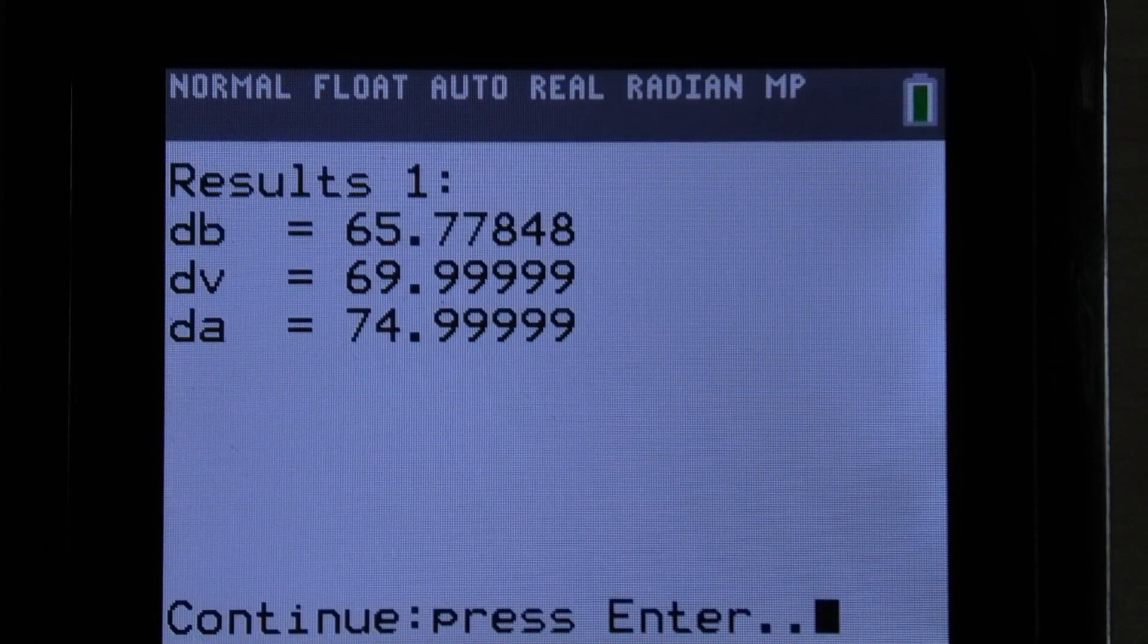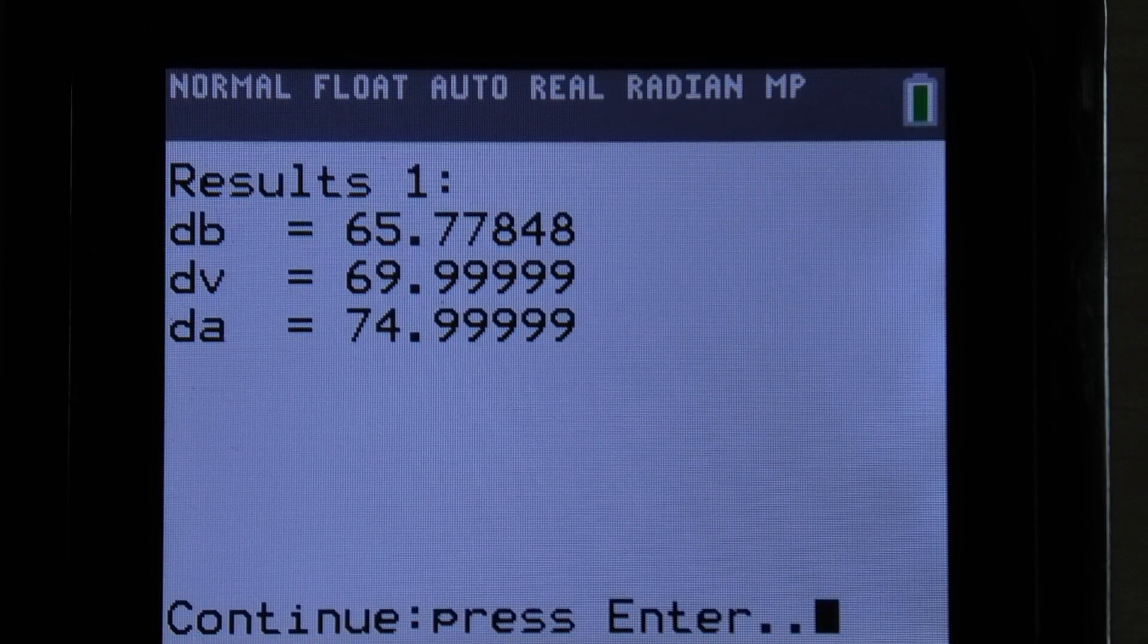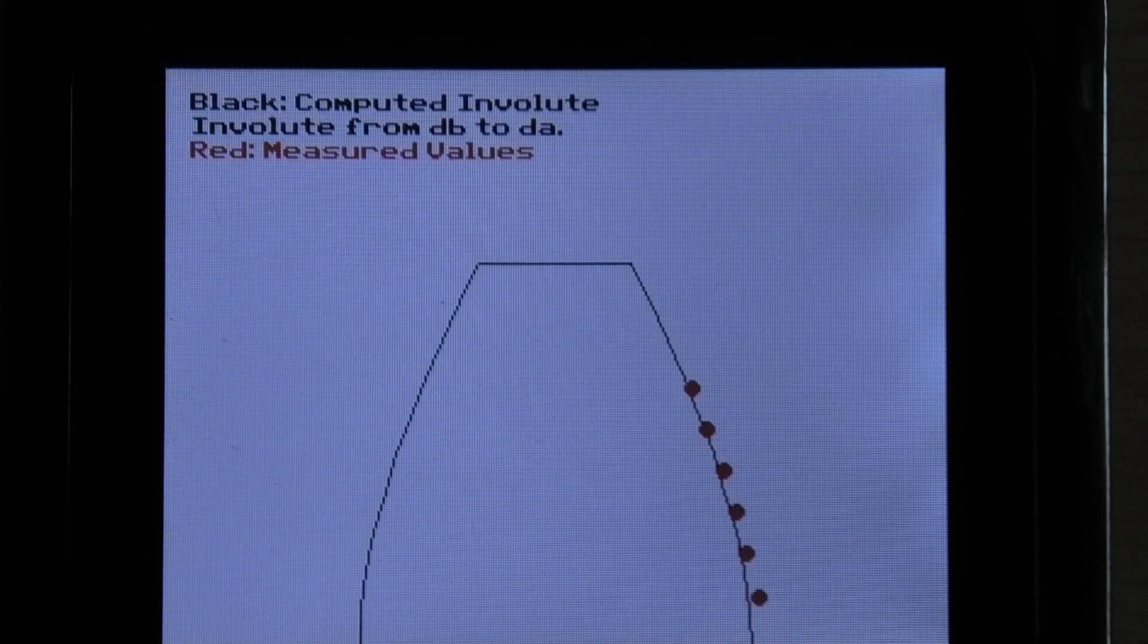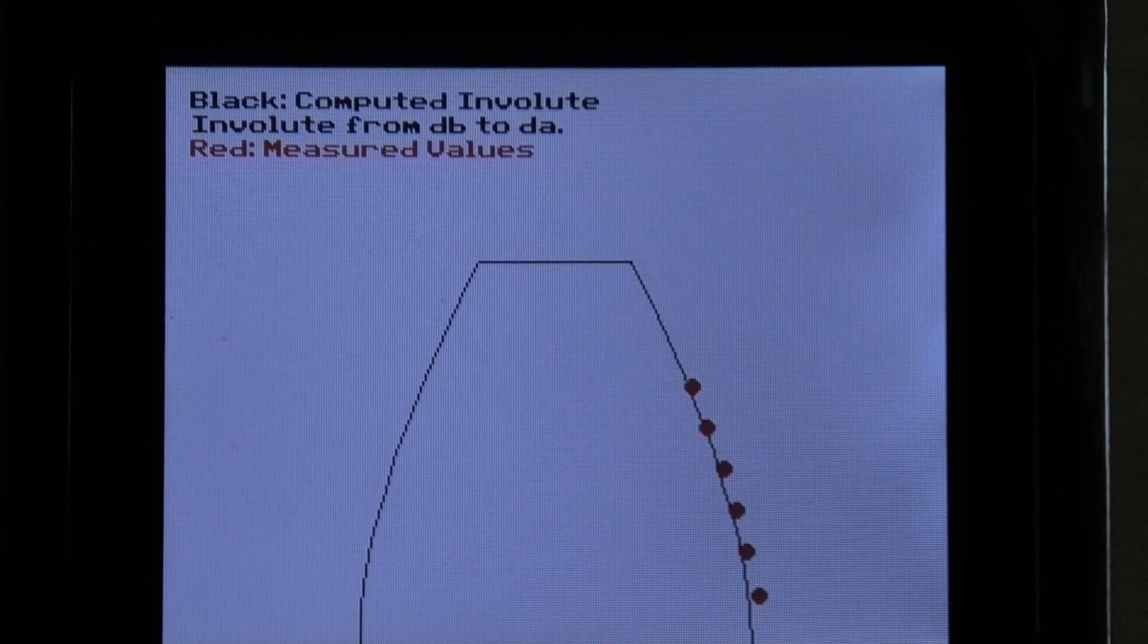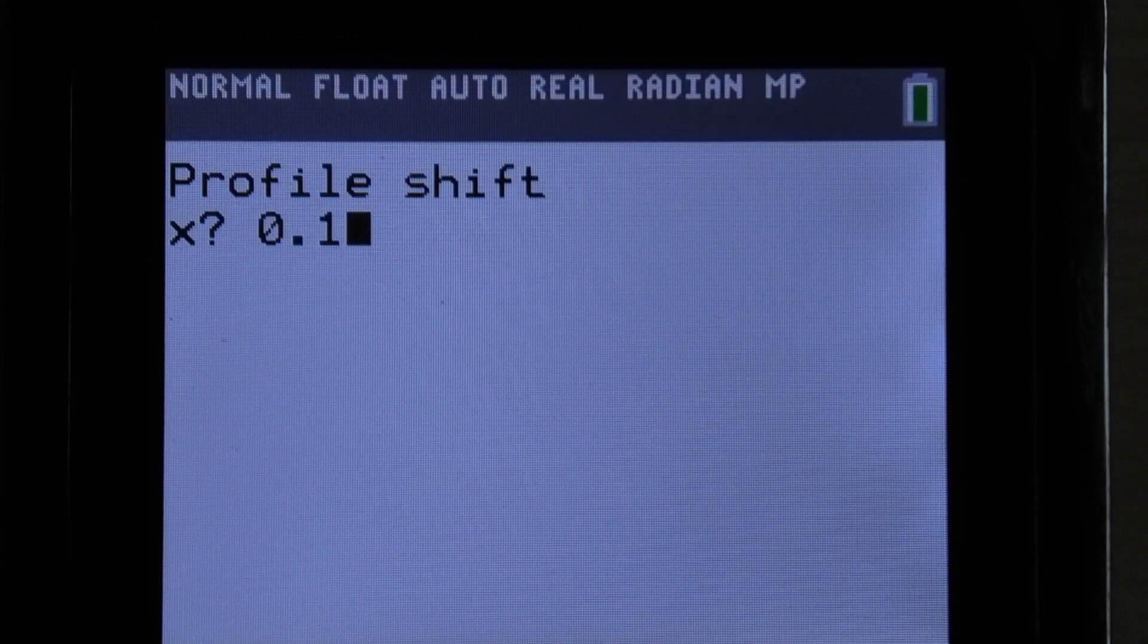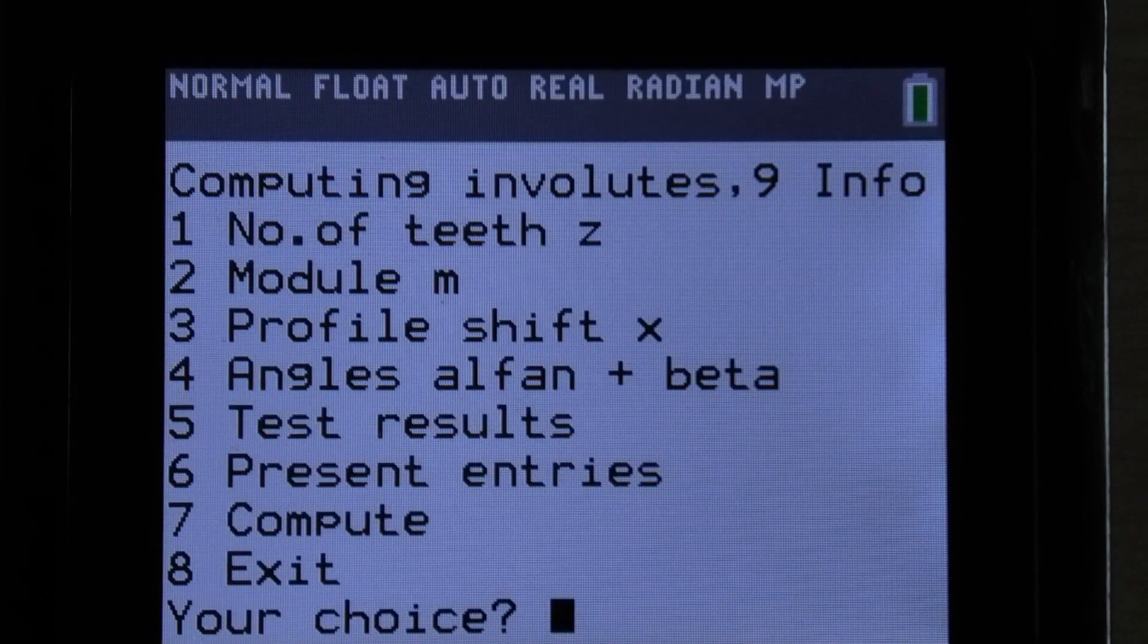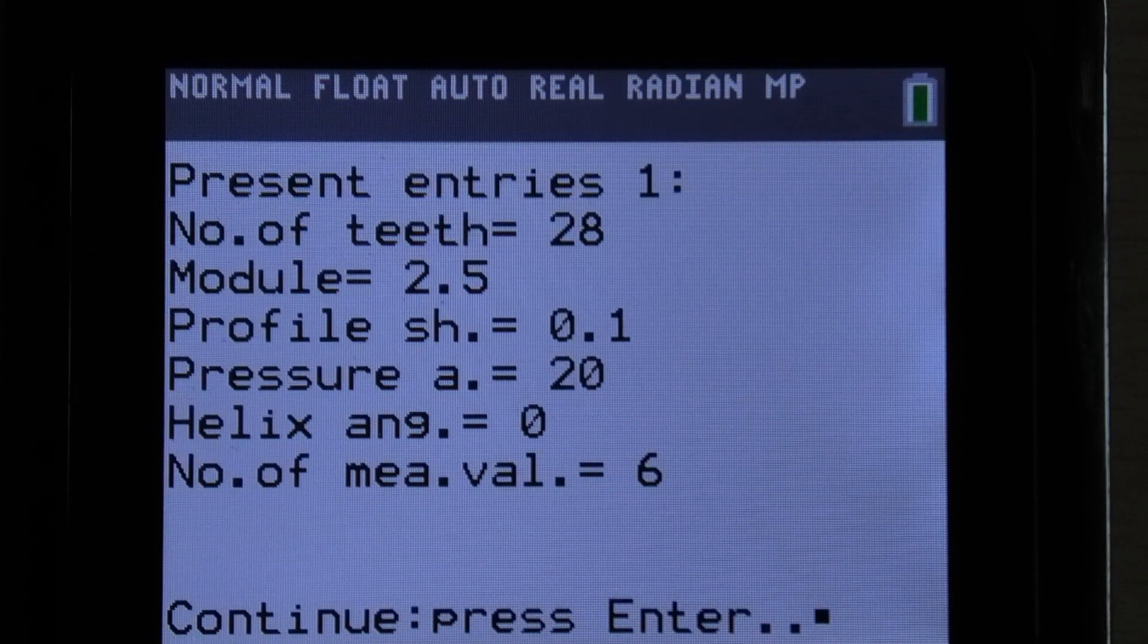Good but not good enough. We measured an outside diameter of 75.5 millimeters but we computed 75 millimeters. This we may improve by adding a profile shift. In fact, gears of car and motorcycle gearboxes nearly always feature profile shifts for several gears to reach the same center to center distances.